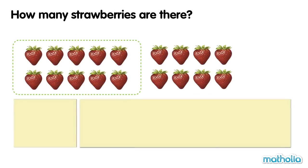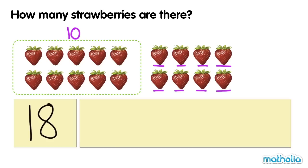How many strawberries are there? Ten, eleven, twelve, thirteen, fourteen, fifteen, sixteen, seventeen, eighteen. There are eighteen strawberries. Eighteen.